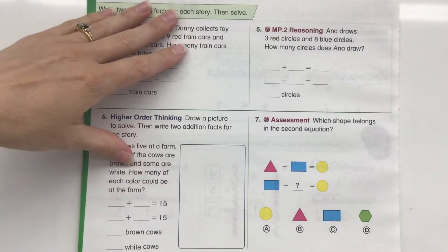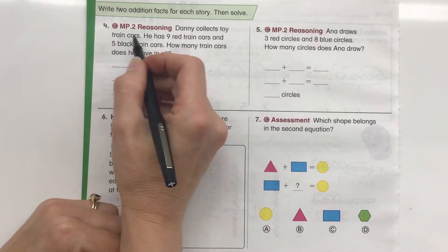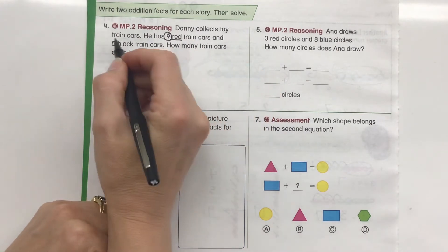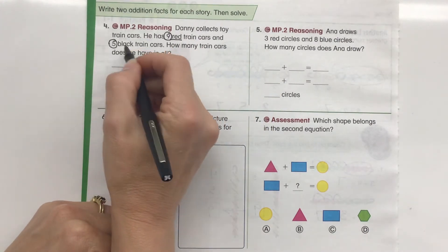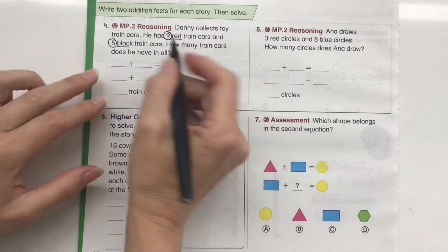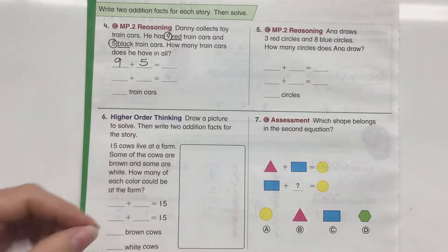Alright, let's take a look at the back page here. Danny collects toy train cars. He has 9 red train cars and 5 black train cars. How many train cars does he have in all? So I know he has 9 red and 5 black. 9 plus 5.